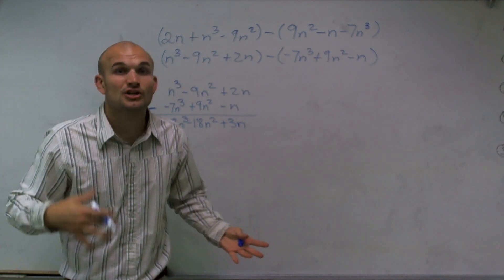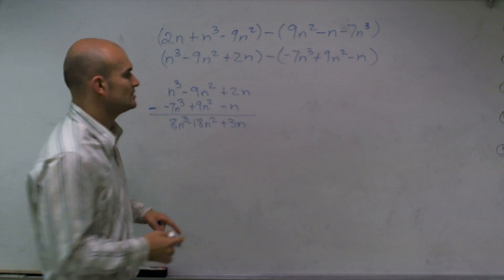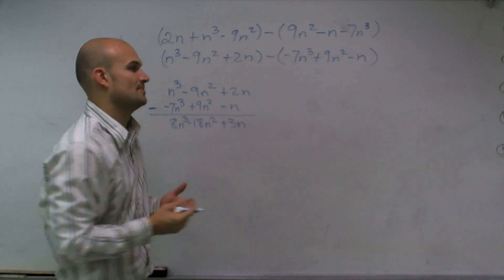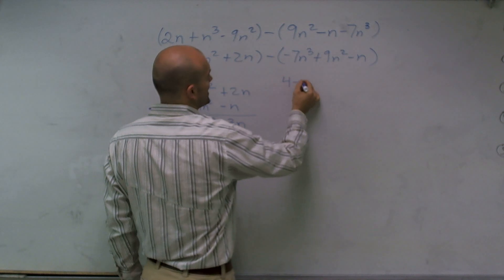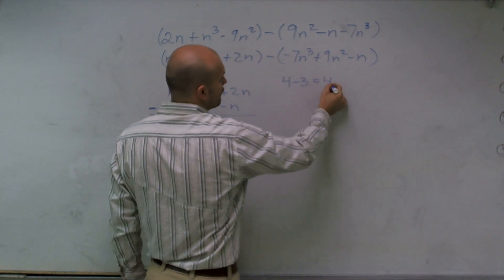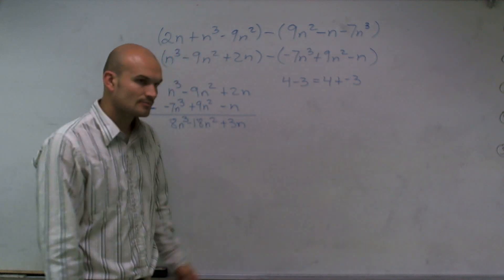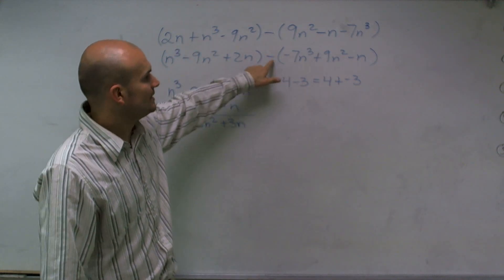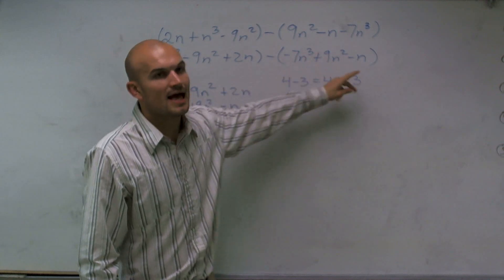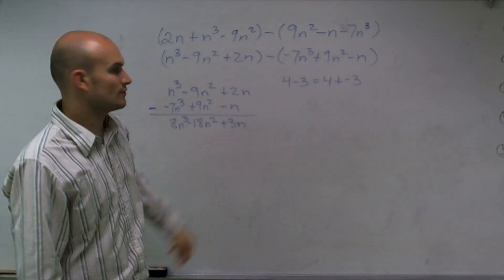Now if you don't like subtraction at all and you'd much rather do addition, what we could do is we can change this to an addition problem. Now the way we can do that is I can write 4 minus 3 is equal to 4 plus a negative 3. So what I'm going to do is I'm going to distribute this negative sign to each one of these terms and then add vertically like I did over here.